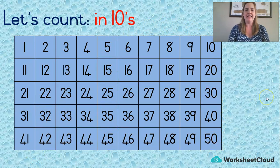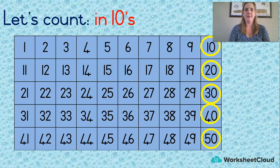Okay, let's count in tens. So we're starting at ten going all the way down. Ten, twenty, thirty, forty, fifty. Well done. Ten, twenty, thirty, forty, fifty. That's an easy one to remember. Counting in tens.